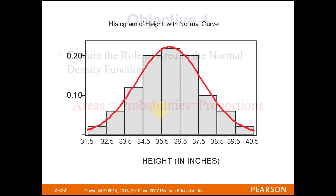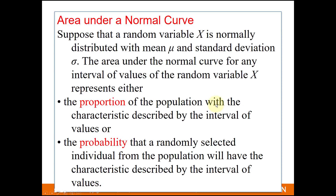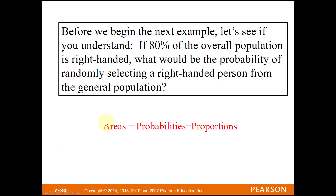Areas equal probabilities, and they also equal proportions. If 80% of the overall population is right-handed and you randomly select one person, the probability is 80% that they'll be right-handed. Proportions and probabilities go hand in hand. Now we're looking at giraffes with an approximately normal distribution for the population, with a mean of 2200 and a standard deviation of 200.